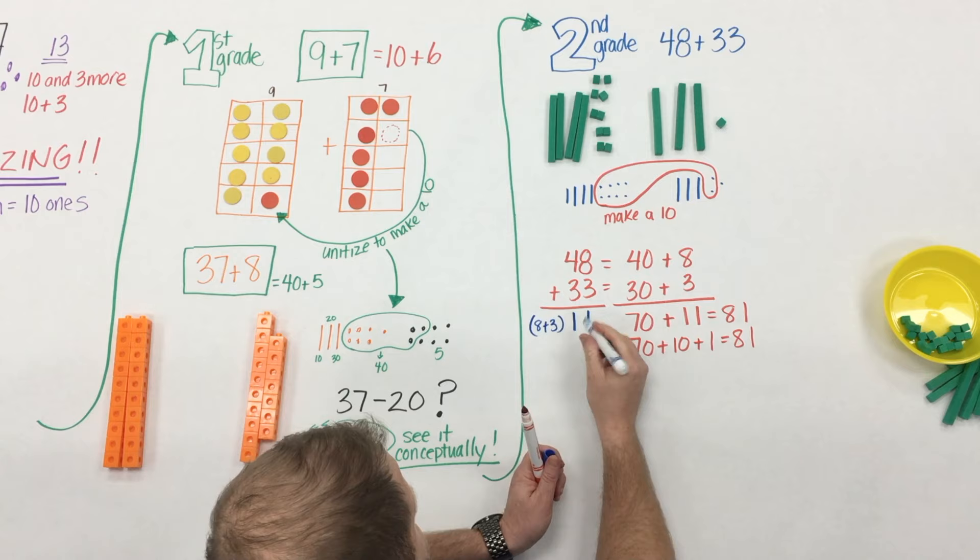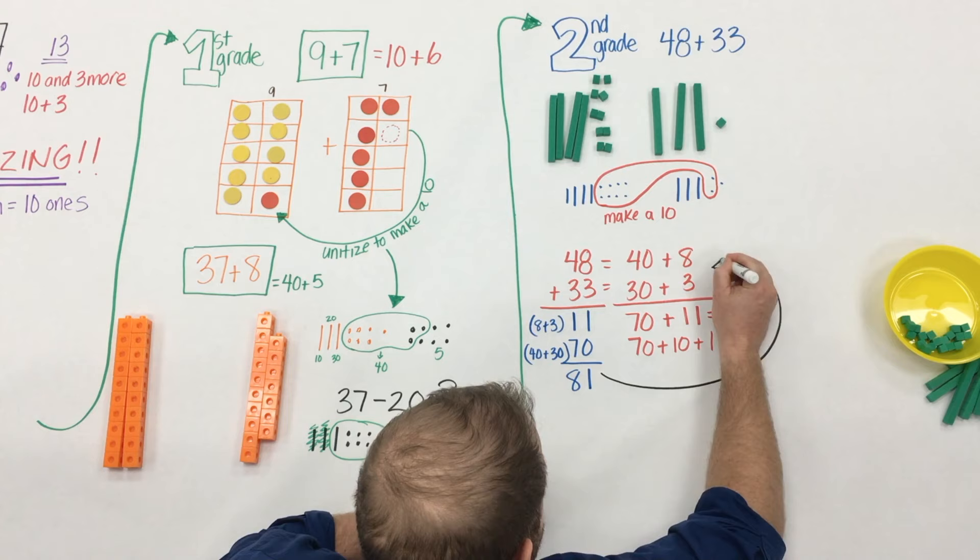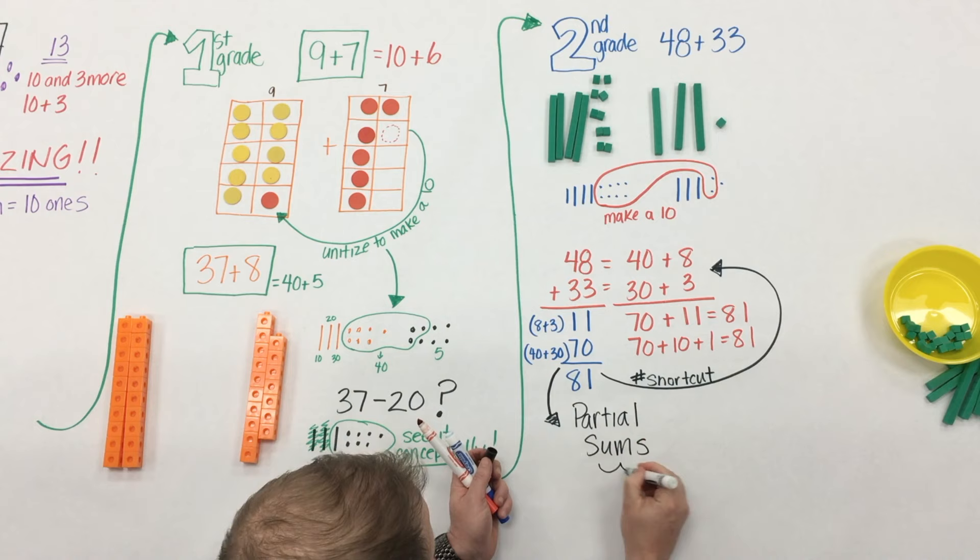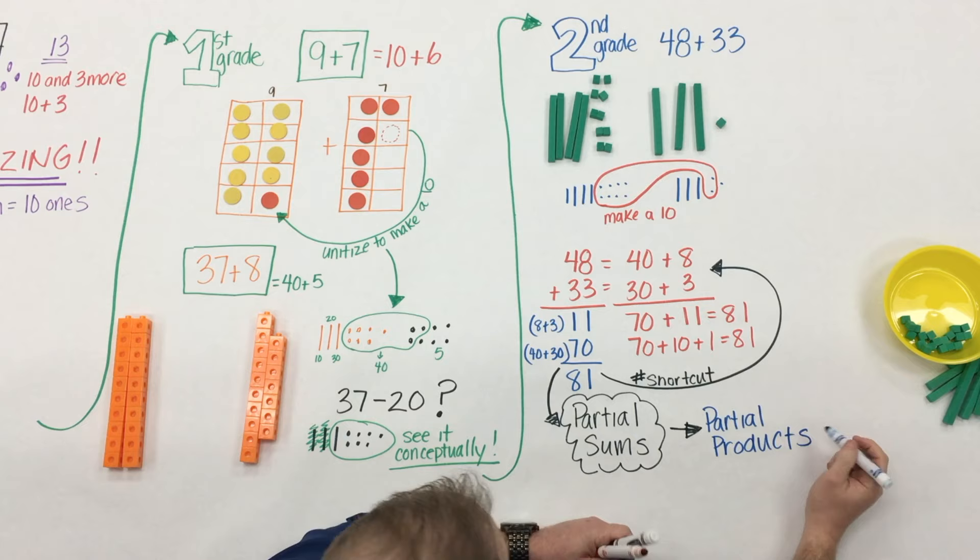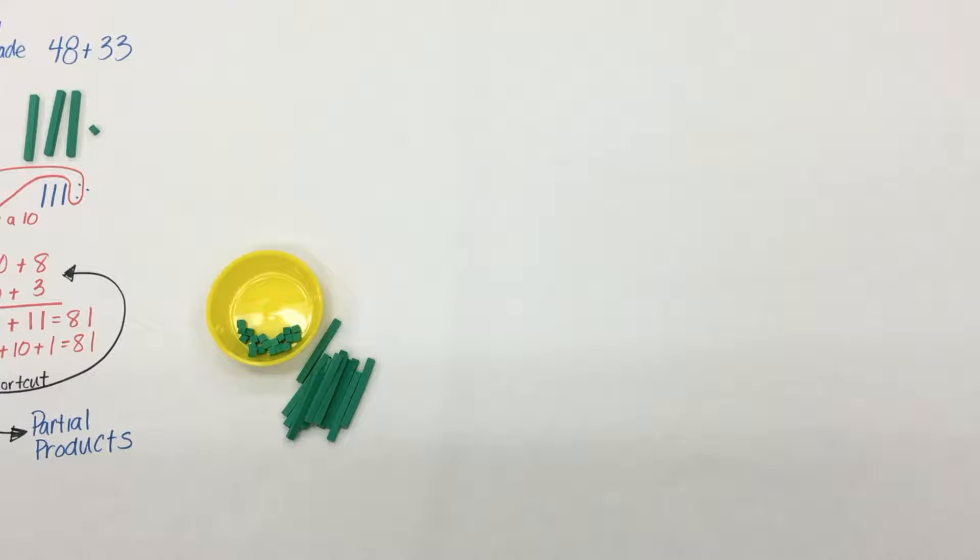Now it might not be efficient or students might see that it's not efficient to write it out on the side all the time. So to become more efficient they can begin to use this understanding of partial sums and find a shortcut. 8 plus 3 is 11, 40 plus 30 is 70 and this understanding of partial sums well it leads brilliantly into their understanding that they begin to develop with partial products in fourth grade.